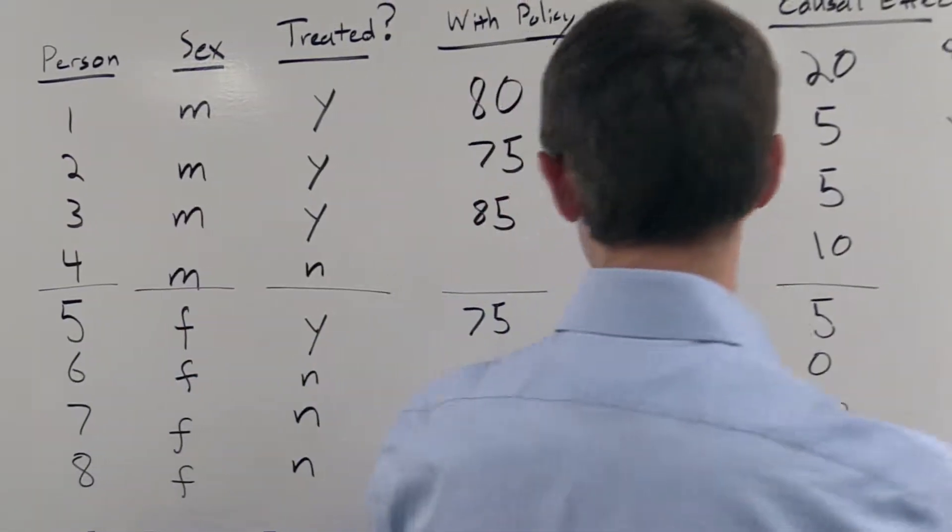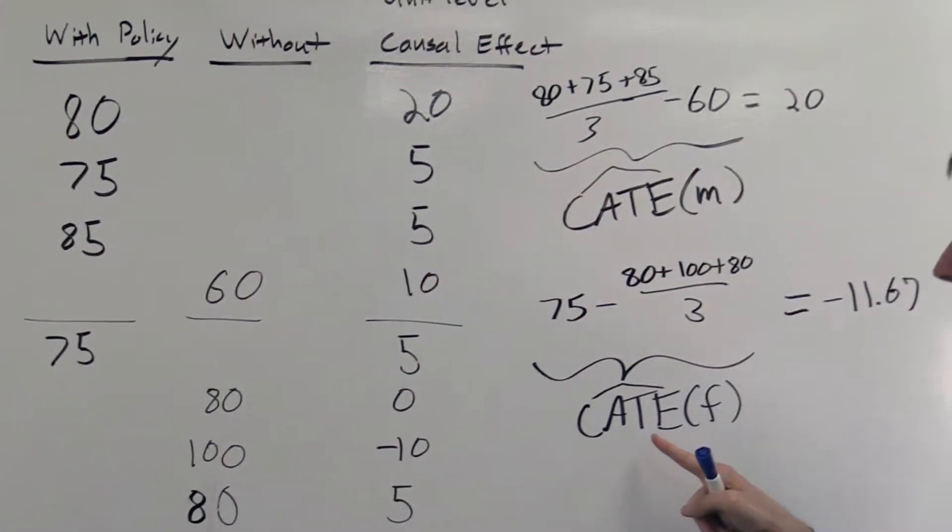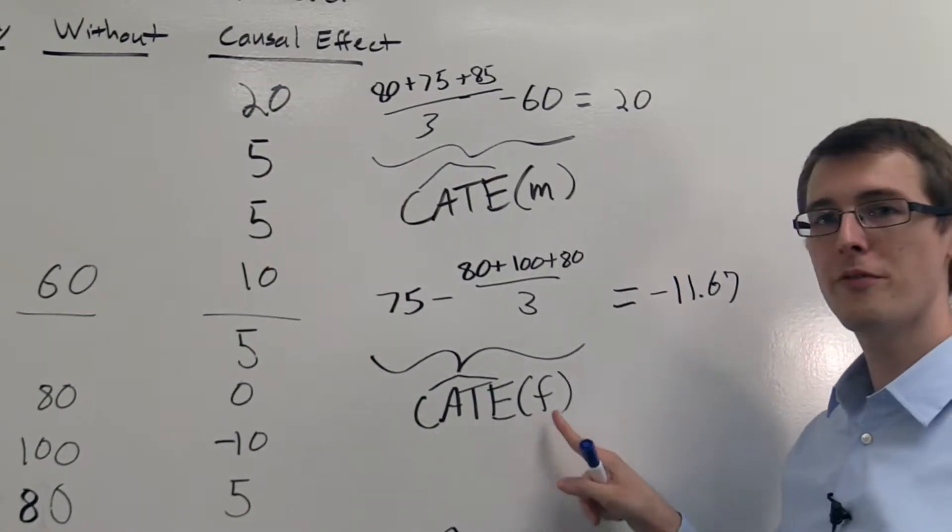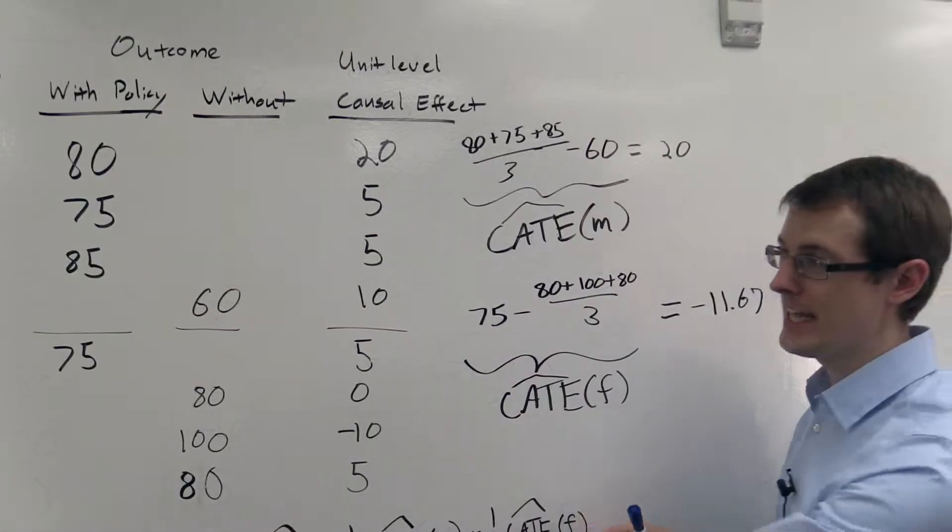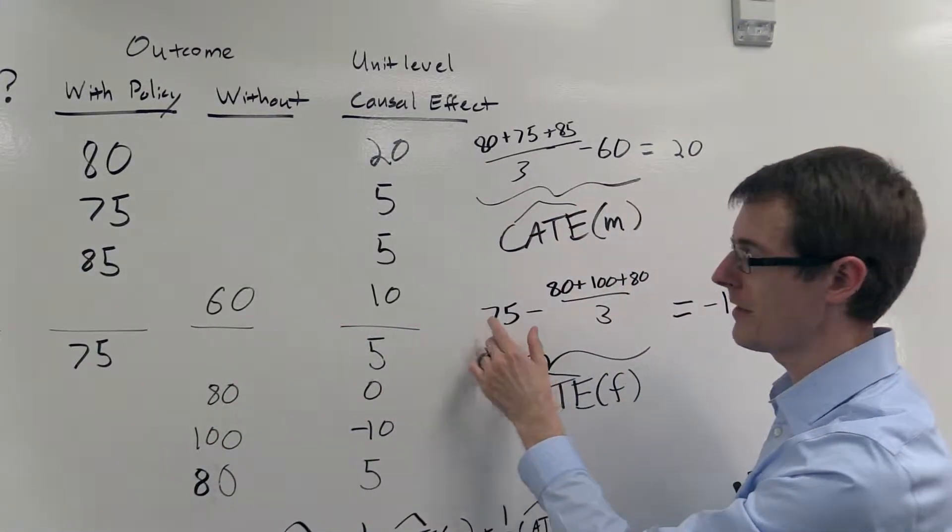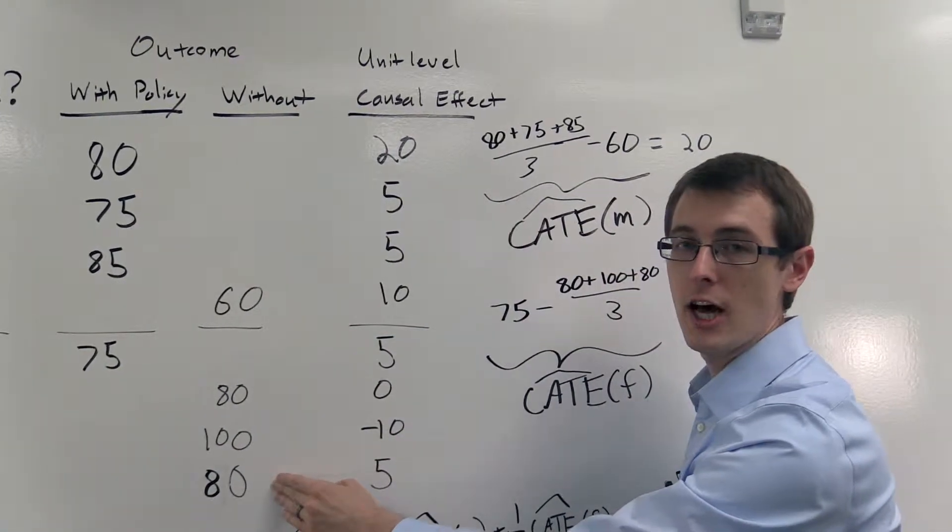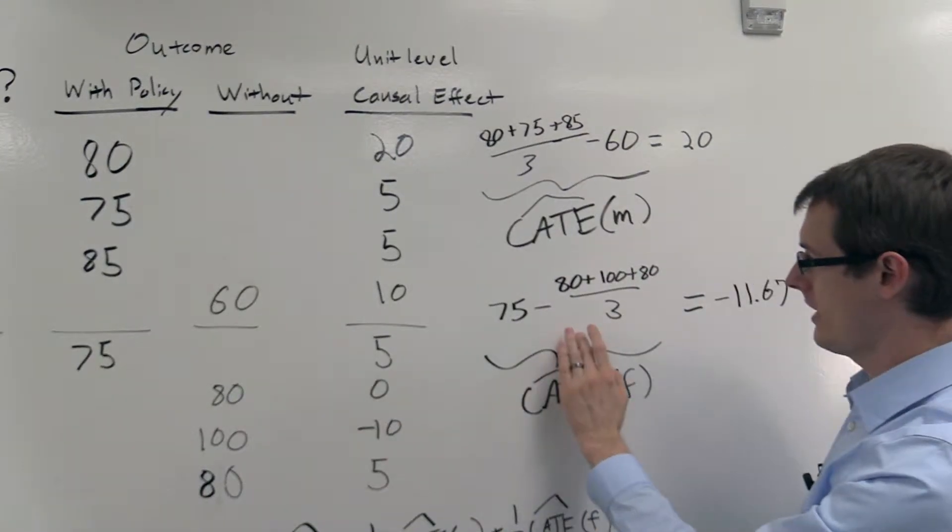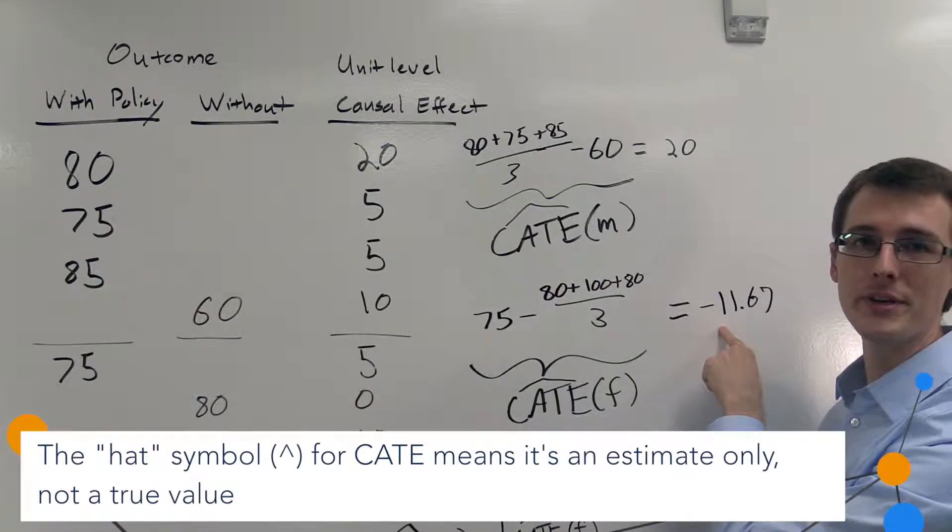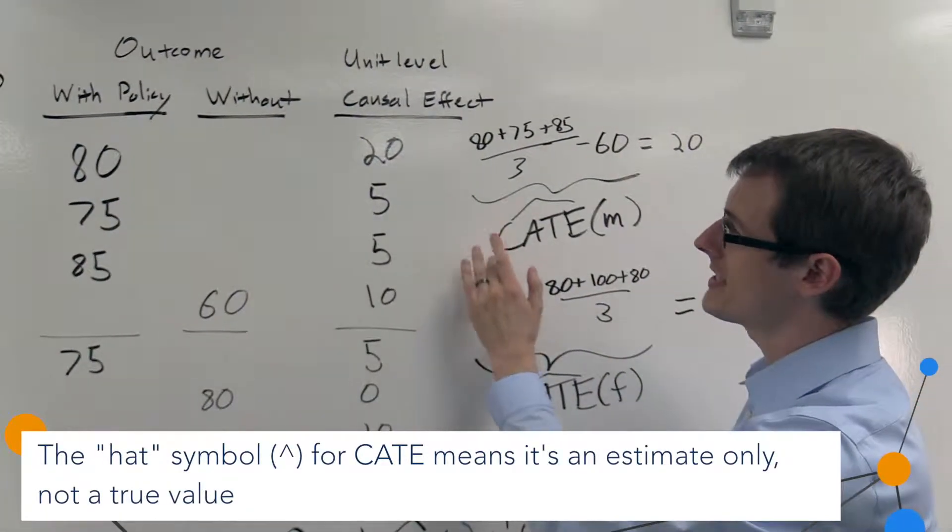So using this data, we can compute an estimate of the conditional average treatment effect for females as follows. Take the average among females who were treated, 75, subtract off the average outcomes among females who weren't treated, and that gives us an estimate of the conditional average treatment effect of minus 11.67.